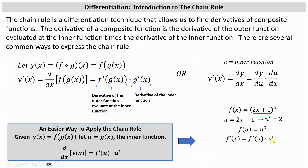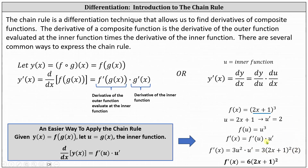This indicates that f prime of x equals f prime of u times u prime — this is the chain rule. f prime of u equals 3u squared, giving us f prime of x equals 3u squared times u prime. We replace u with 2x plus 1 and u prime with 2, giving us f prime of x equals 3 times the square of 2x plus 1 times 2. Simplifying, f prime of x equals 6 times the square of the quantity 2x plus 1. Let's look at some more examples.